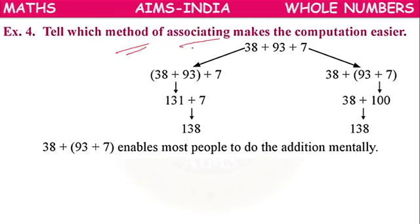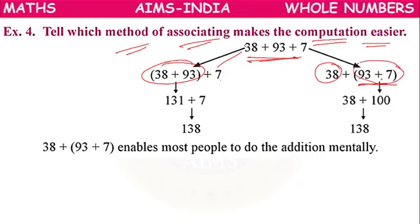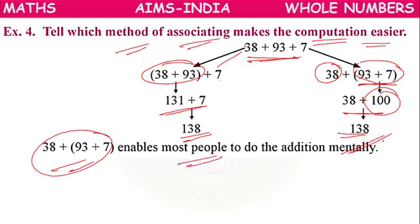Which method of associating makes computation easier? For example, when adding three numbers, grouping 38 and 100 together is easier because 38 plus 100 gives 138. Most people can do this addition mentally since 93 plus 7 plus 38 — grouping 7 and 38 as 100, then adding 93 easily gives 138.